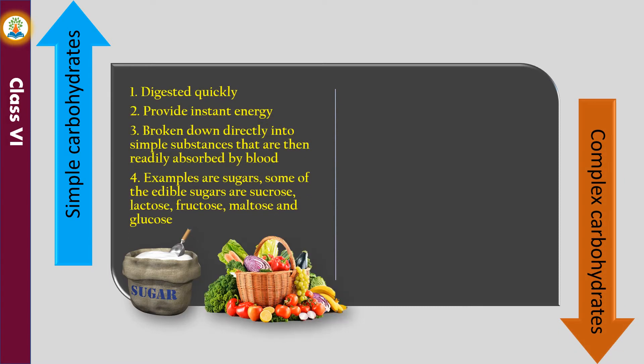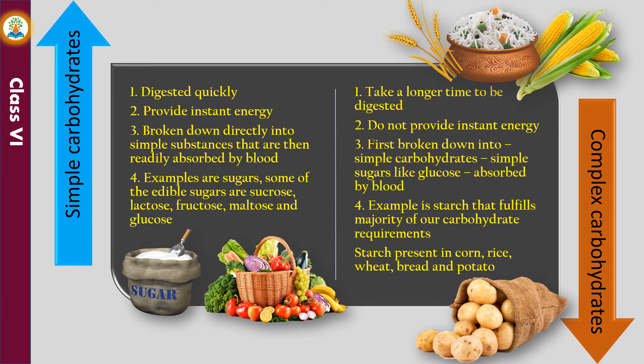Simple carbohydrates are digested quickly, provide instant energy, and are broken down into simple substances that are readily absorbed by blood. Examples are sugars such as sucrose, lactose, fructose, maltose, and glucose. Complex carbohydrates take a longer time to be digested and do not provide instant energy; they are first broken down into simple sugars like glucose and then absorbed by blood. An example is starch, found in corn, rice, wheat, bread, and potato.